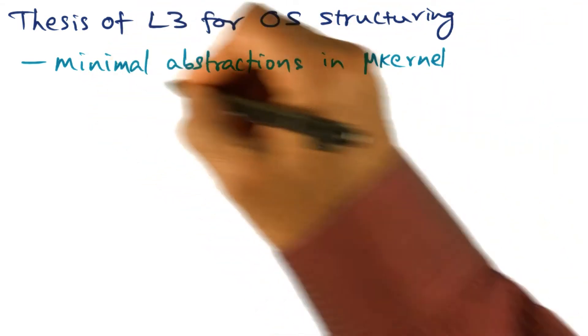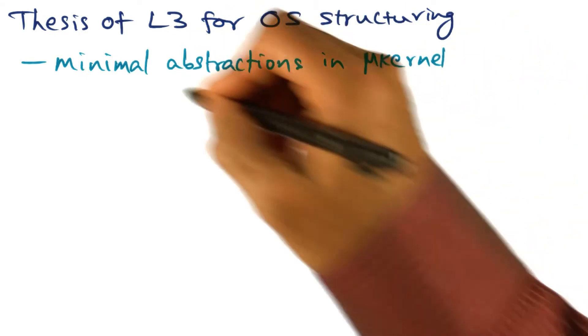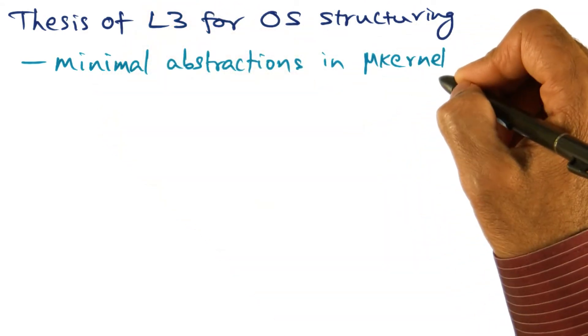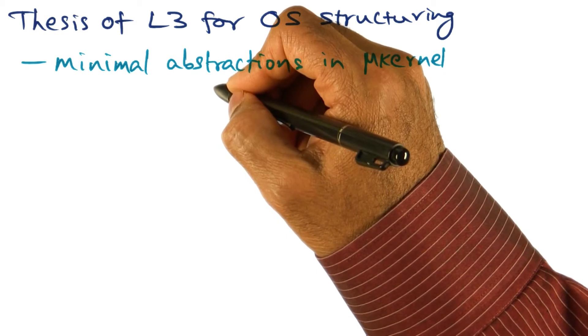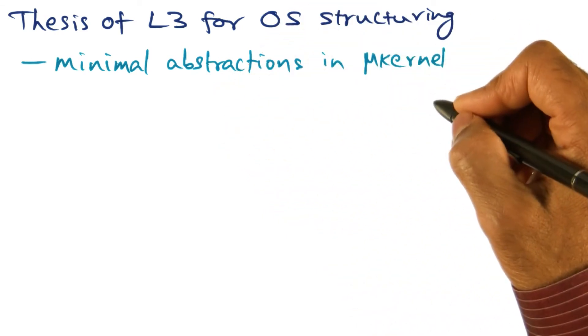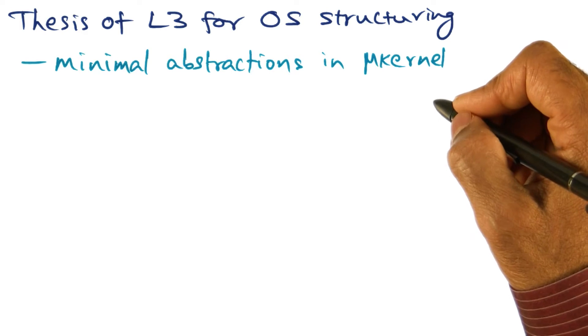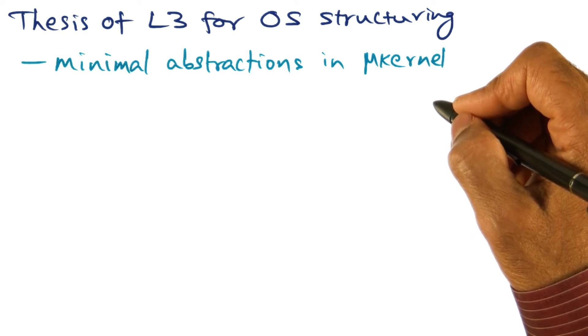The first principle advocated by L3 is that the microkernel should have minimal abstractions. That includes support for address spaces, threads, inter-process communication, and generating unique IDs.